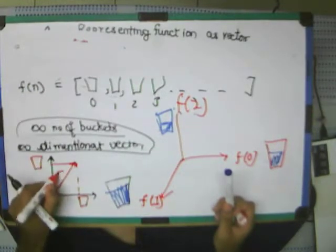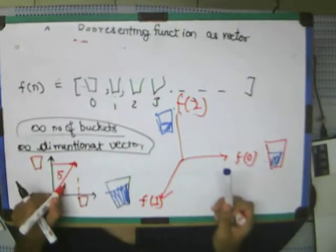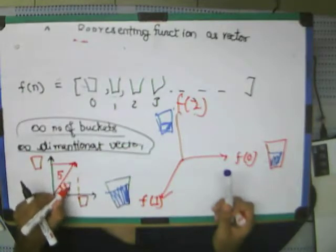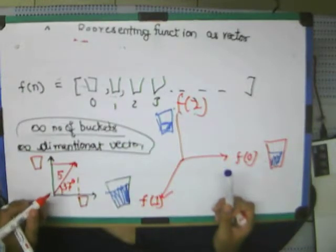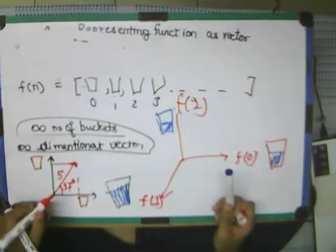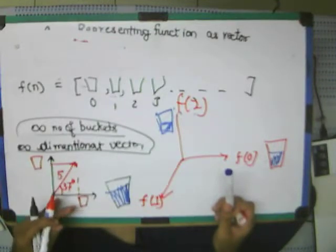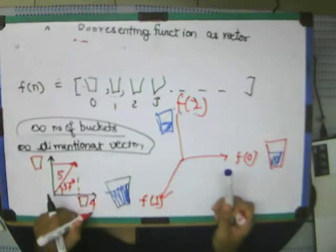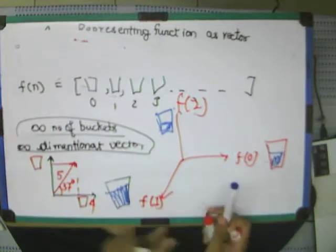For example, if this is 5, this angle is 37 degree, this is 5,3 degree. So in some sense, this length, this bucket will contain value 4 and this bucket will contain value 3.